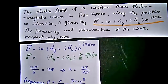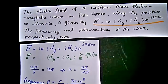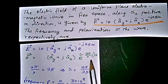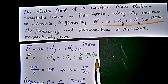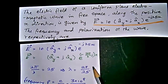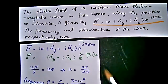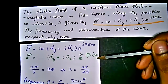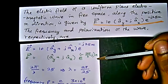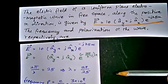This equation is similar to the standardized form: E vector equal to (a-cap-y plus j a-cap-z) multiplied by e to the power minus j(2π/λ)x. This standardized formula applies to the uniform plane electromagnetic wave propagating in the x direction.